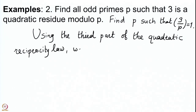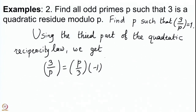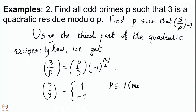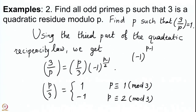We get (3/p) = (p/3) × (−1)^{(3−1)/2 · (p−1)/2} = (p/3) × (−1)^{(p−1)/2}. Now (p/3) equals 1 or −1 depending on whether p ≡ 1 mod 3 or p ≡ 2 mod 3. And (−1)^{(p−1)/2} equals 1 when p ≡ 1 mod 4, and −1 when p ≡ 3 mod 4.